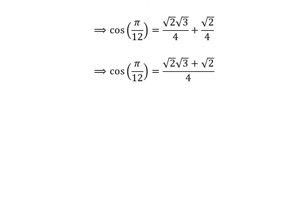Adding the fractions gives us cosine of pi upon 12 is equal to square root of 2 times square root of 3 plus square root of 2 upon 4. Taking out the common factor square root of 2 in the numerator gives us cosine of pi upon 12 is equal to square root of 2 times the quantity square root of 3 plus 1, upon 4.